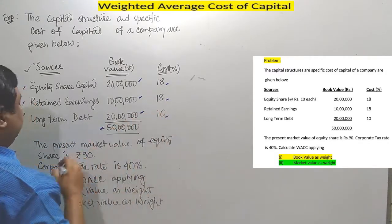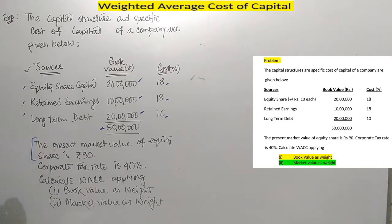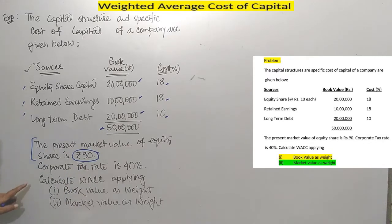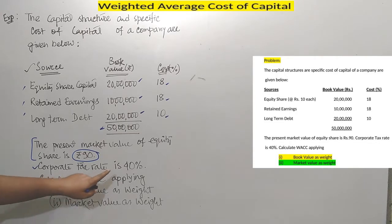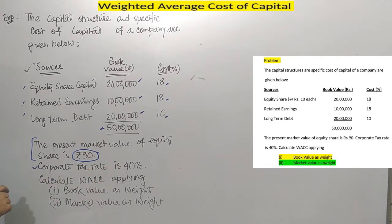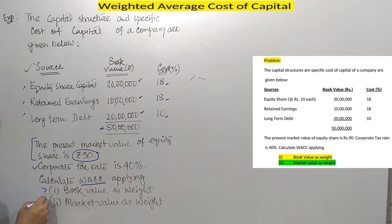For long-term debt it is 10%. The present market value of equity share is Rs. 90 right now. Corporate tax rate is 40%. Calculate the weighted average cost of capital using book value as well as market value.